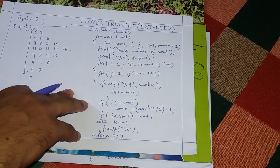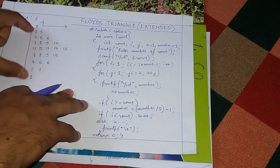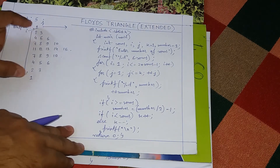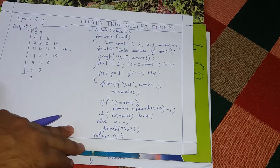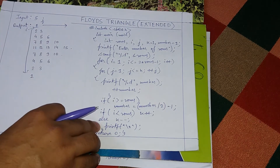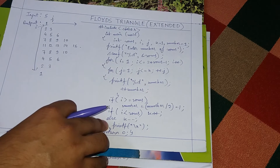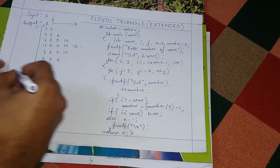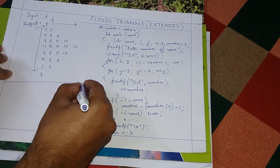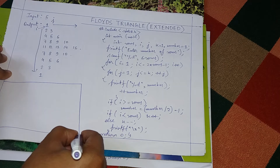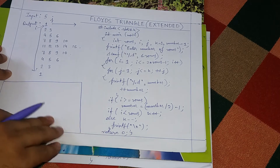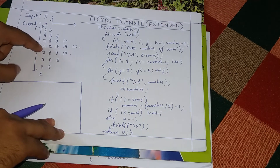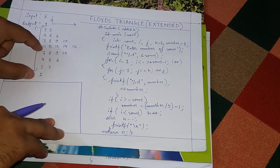That is how our program works and the pattern will be printed. A simple dry run is recommended — you can do it yourself. All we need to understand is what is happening after the mirror line; the rest is straightforward.